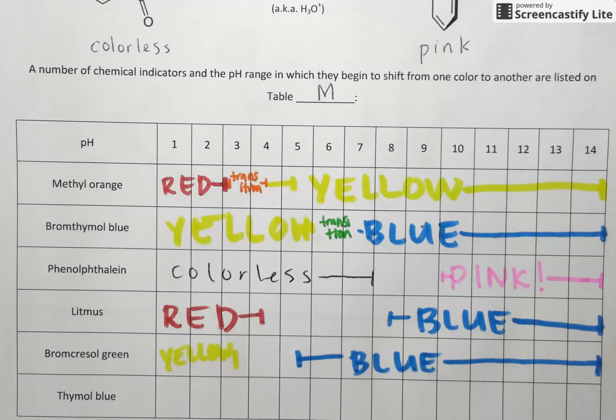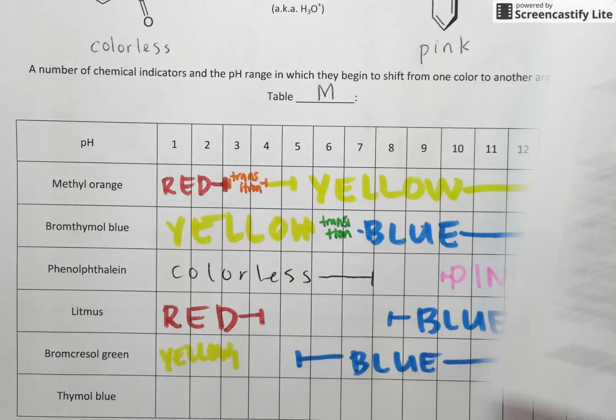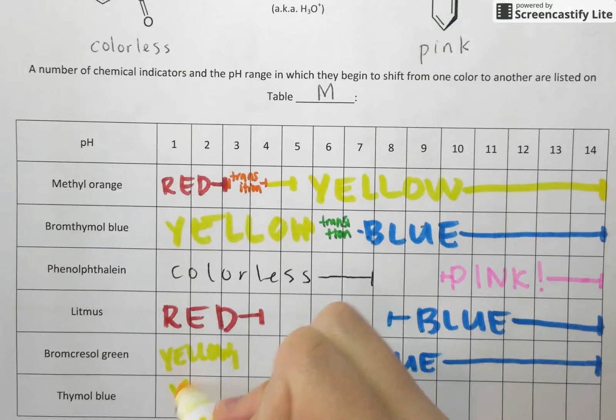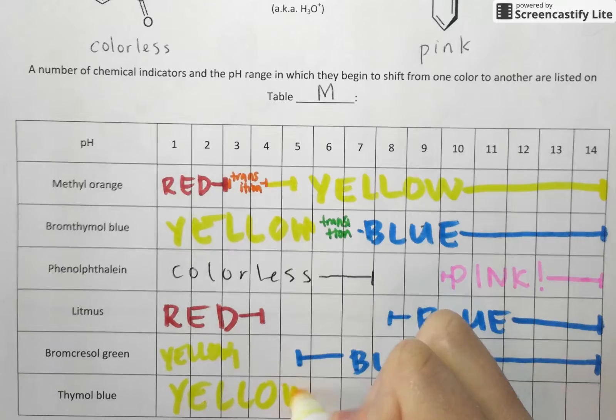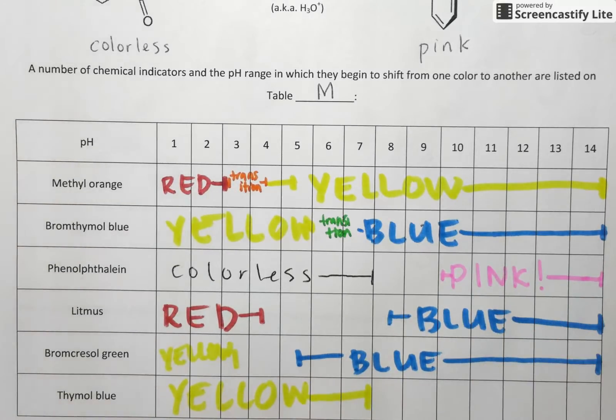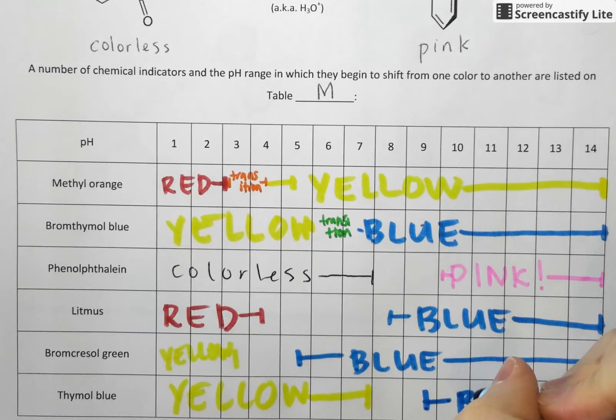Same deal goes for thymol blue. Below pH 8.0, that compound is going to be yellow. Between 8.0 and 9.6, it's going to be slowly changing to a blue color. So once we hit 9.6, we'll be fully blue.